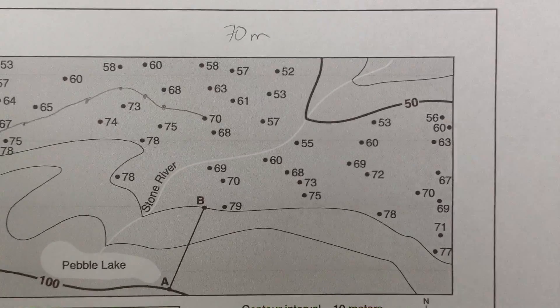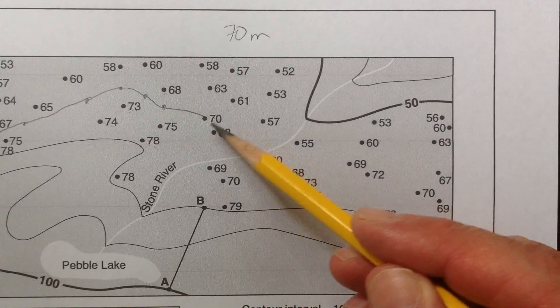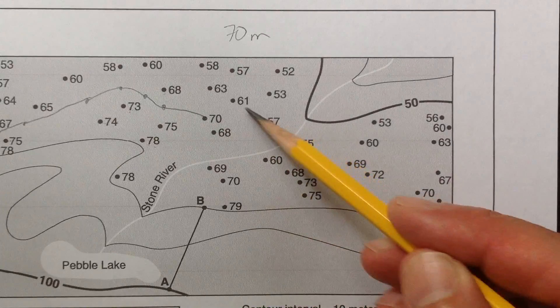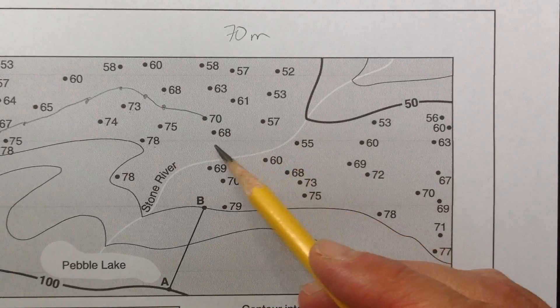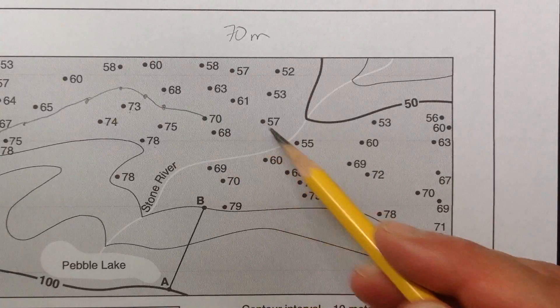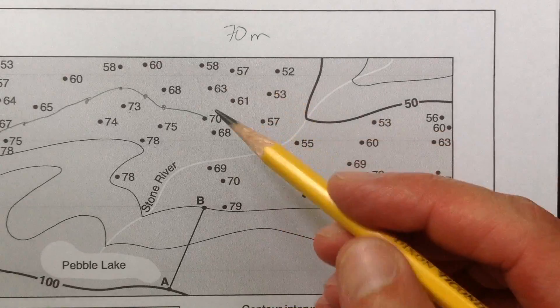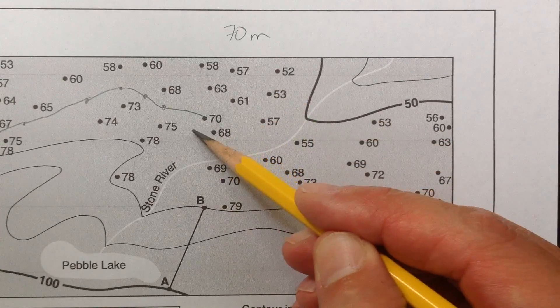So where is the next 70 in this case? Is 70 between 61 and 57? No, those are too high. Is 70 between 68 and 57? No, those are too low. Sorry, these are too low, that's what I meant to say. Is 70 between 75 and 68? Yes, it is.